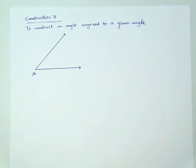The following is the demonstration for Construction 3, in which we are to construct an angle congruent to a given angle. For example, let's start with this angle A here.